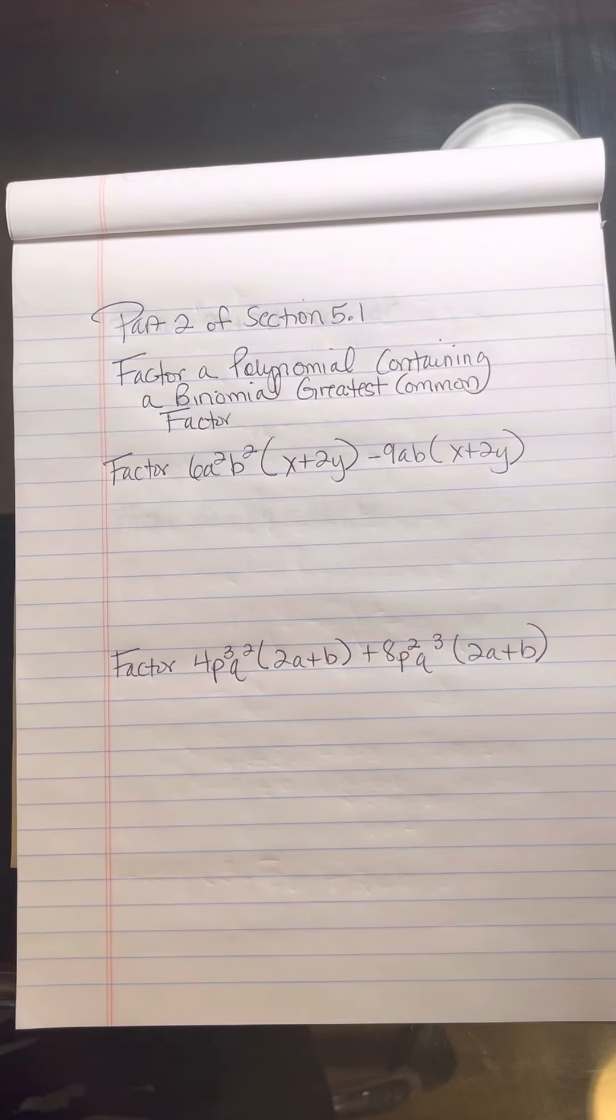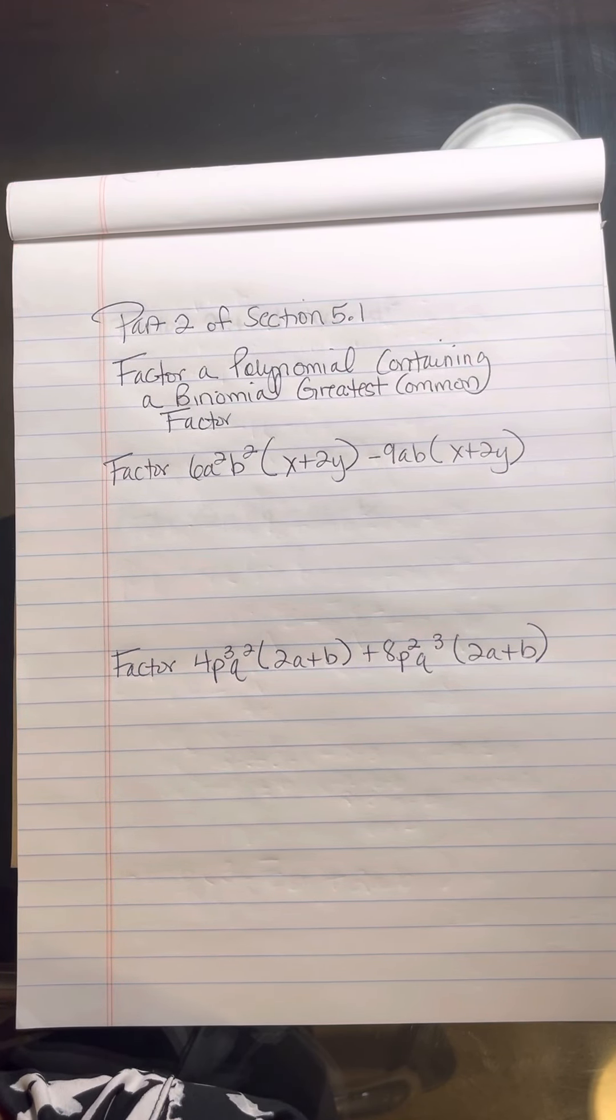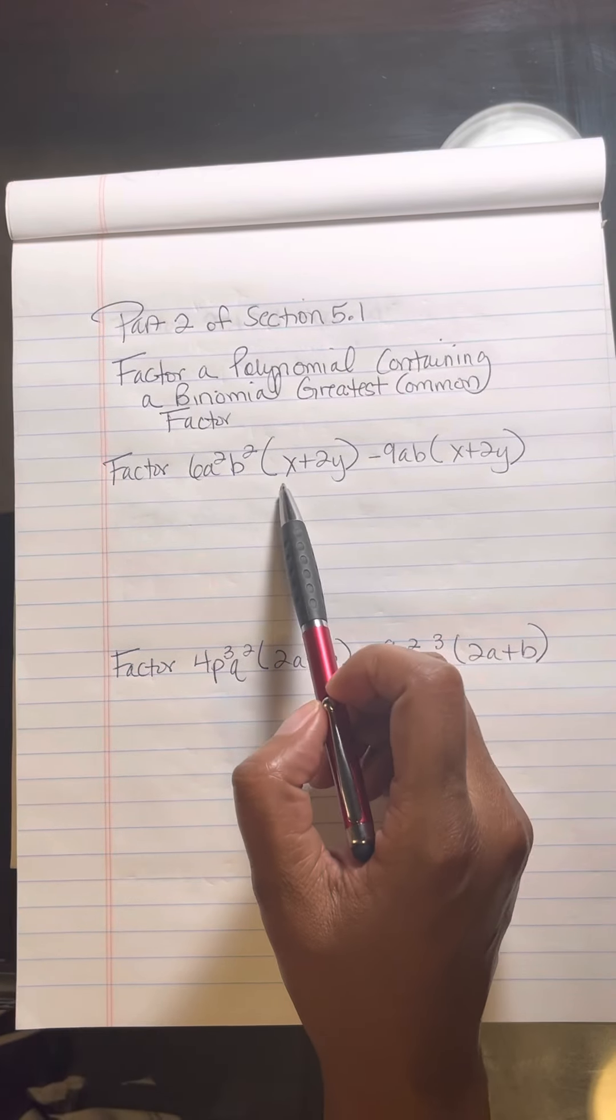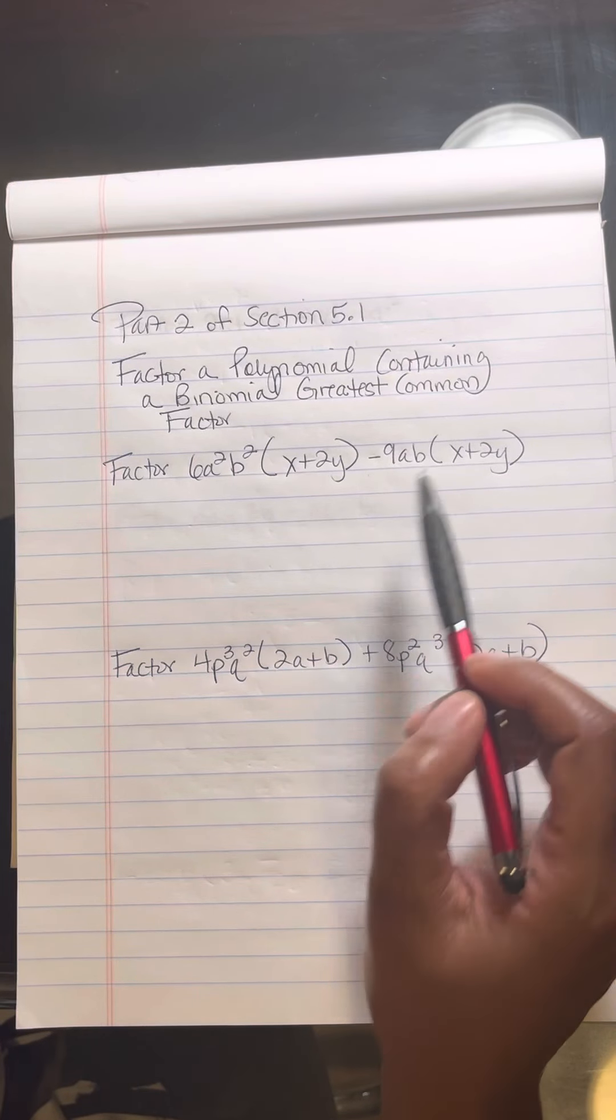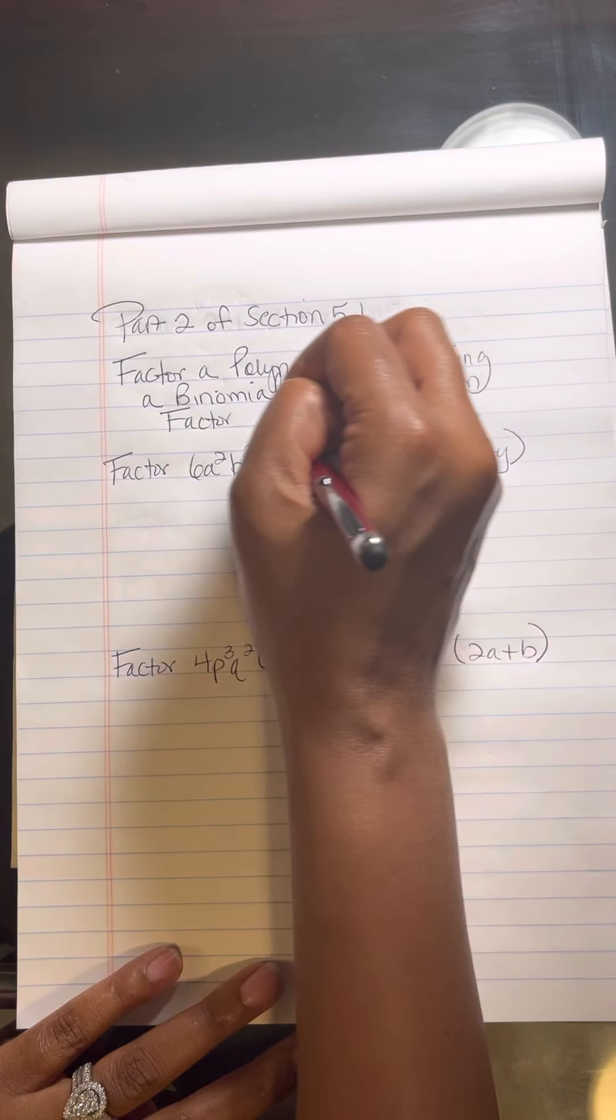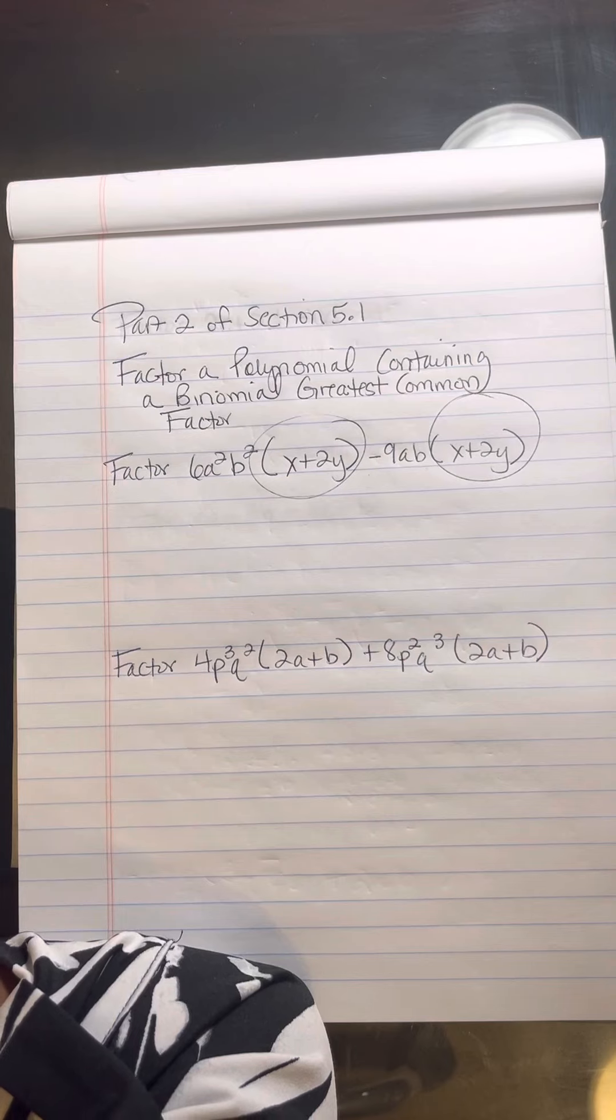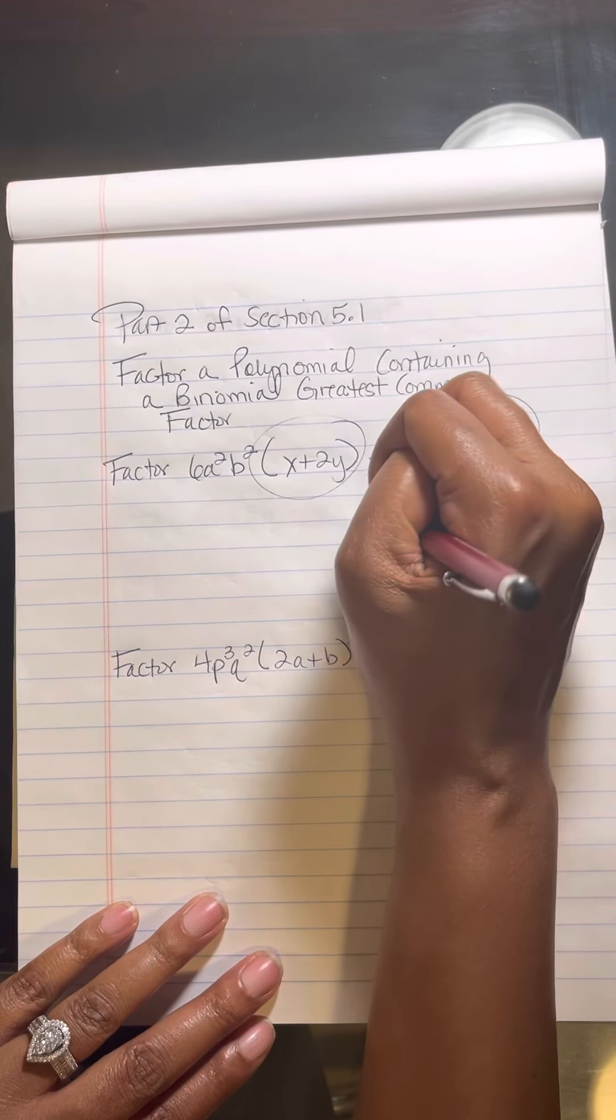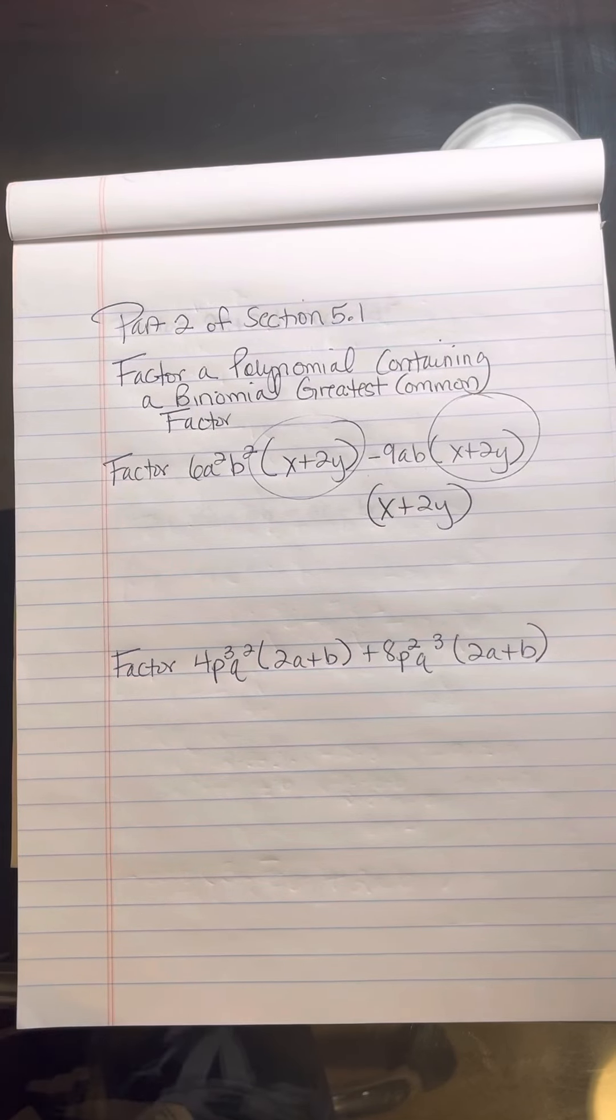If the text asks you or your homework assignment asks you to factor, for example, 6a²b in parentheses, you see x plus 2y minus 9ab, and in other parentheses you see x plus 2y. What should you put as your answer? Well, it looks to me like this is a common factor. So let me write down the common factor that they both have. I just need to write it one time.